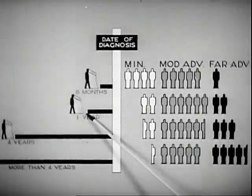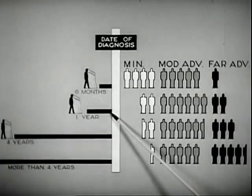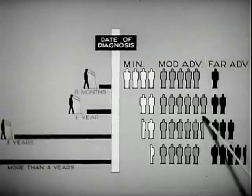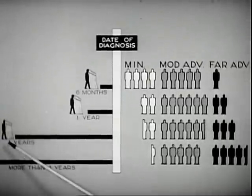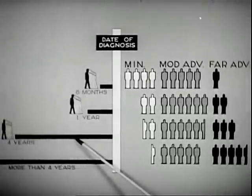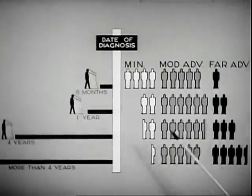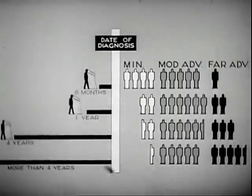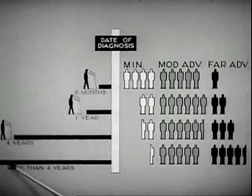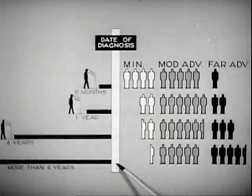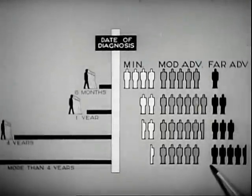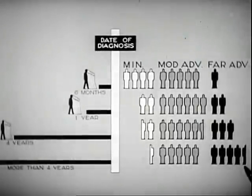In another group where diagnosis was delayed six to twelve months, the distribution was worse. A third group suffered a delay of one to four years, and only fifteen percent were in the minimal stage. In the group where a definite diagnosis was made four or more years after the appearance of the first symptom, forty-five percent were in the far advanced stage.